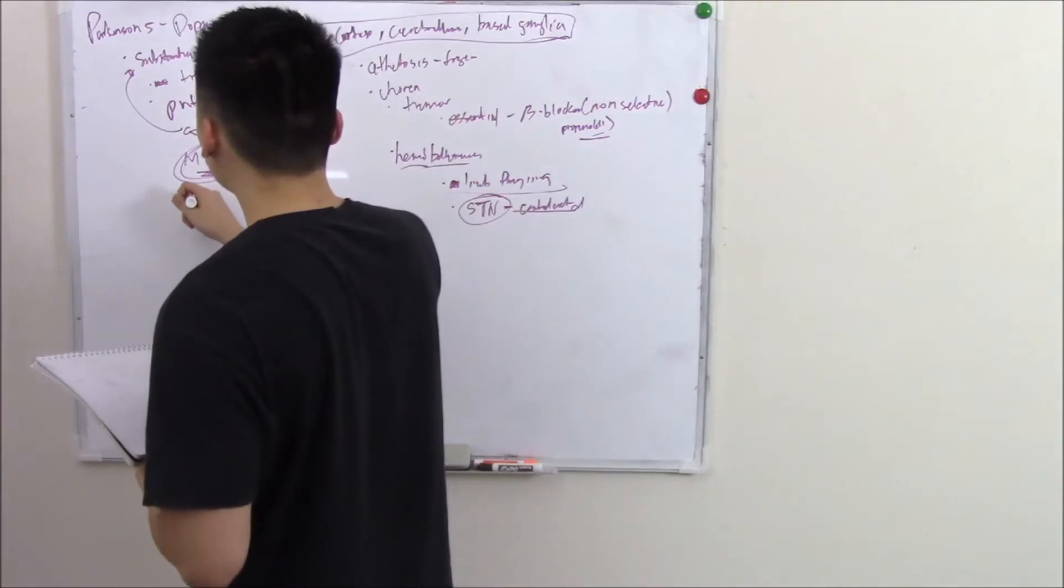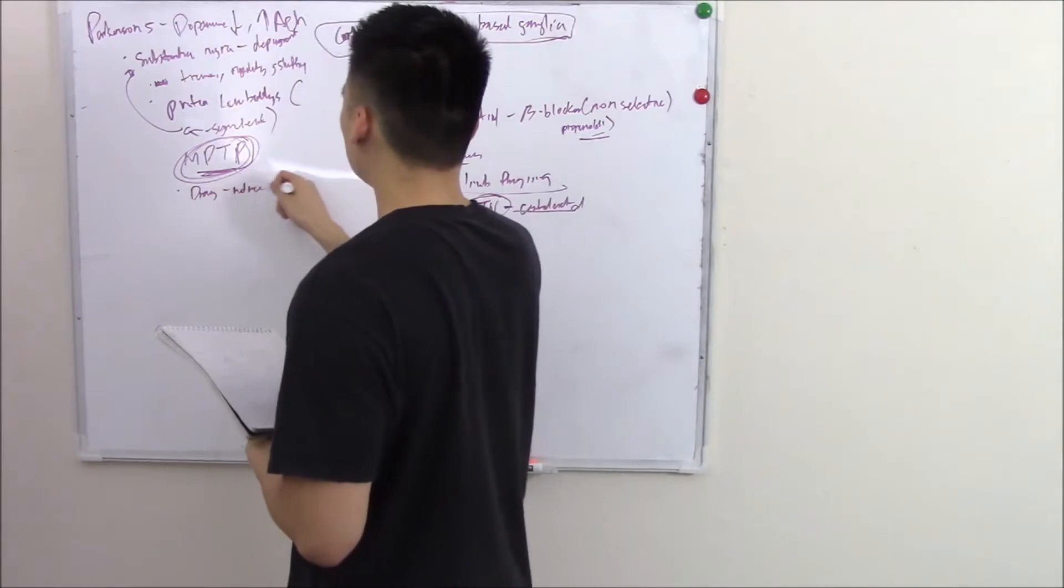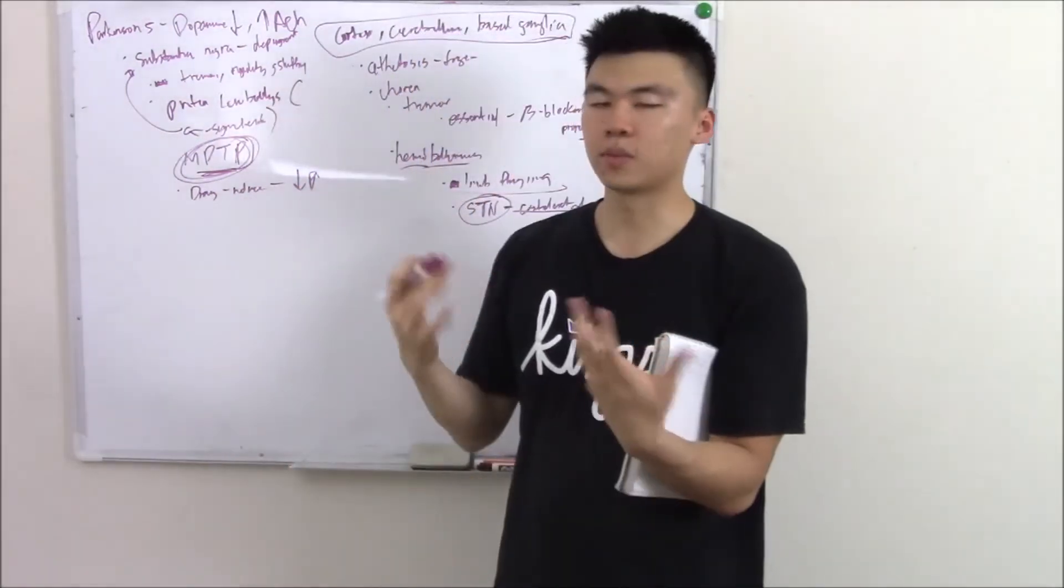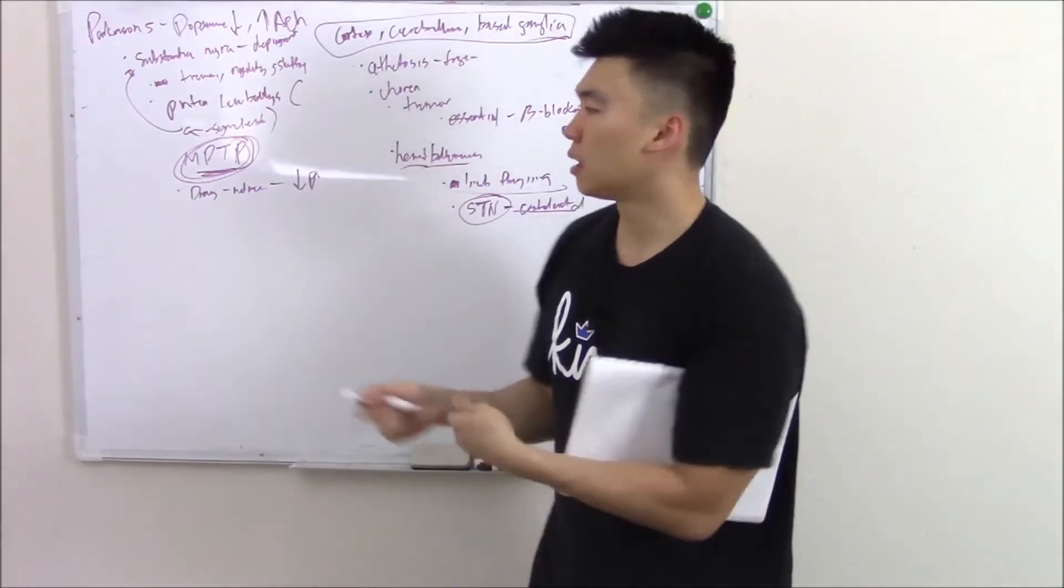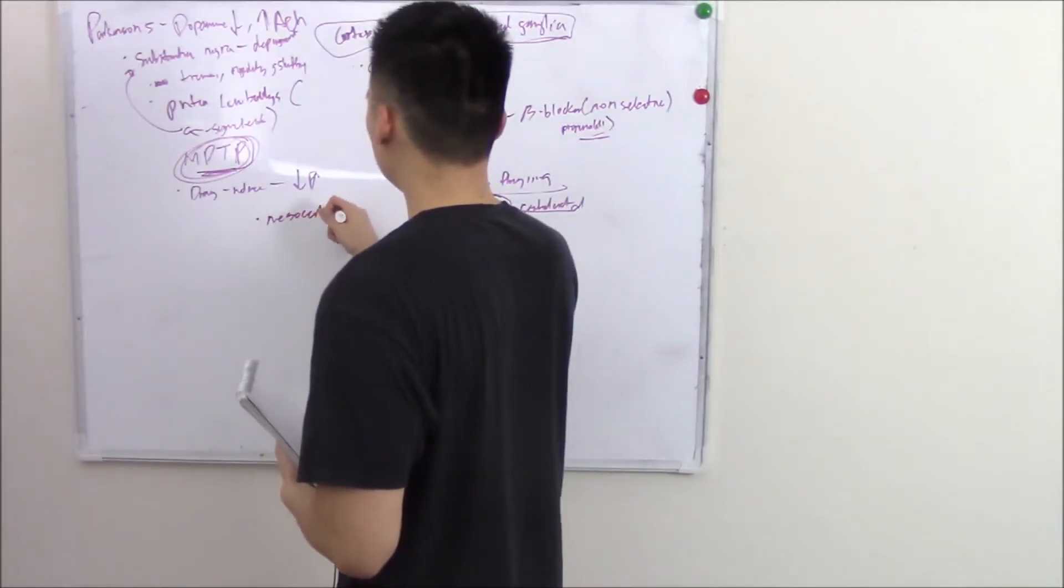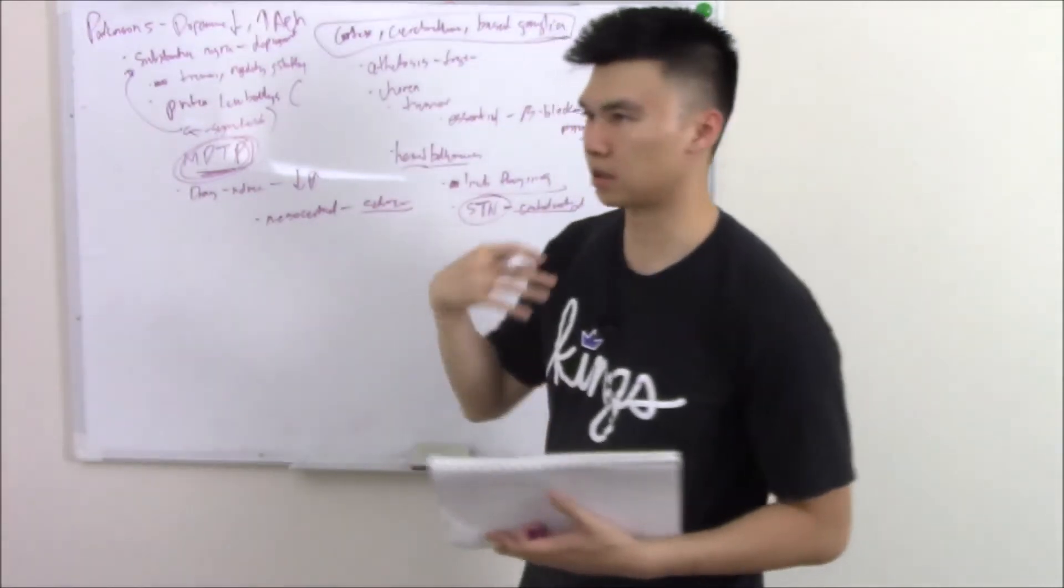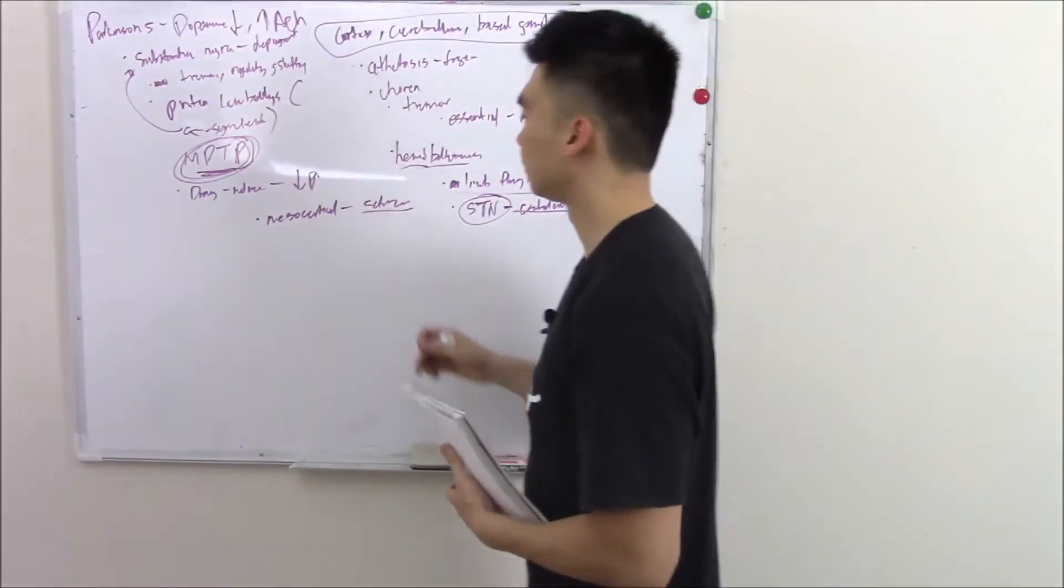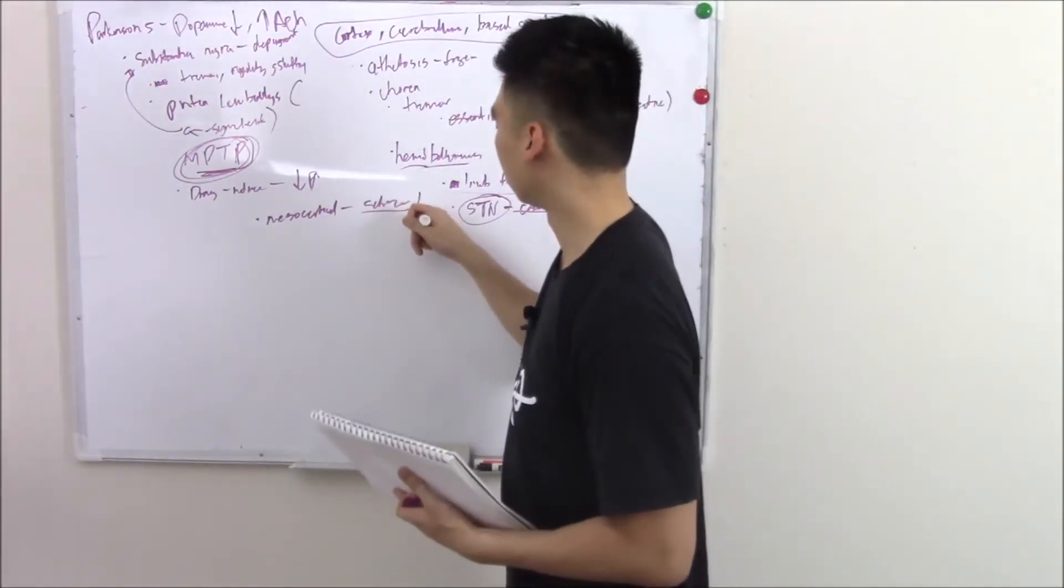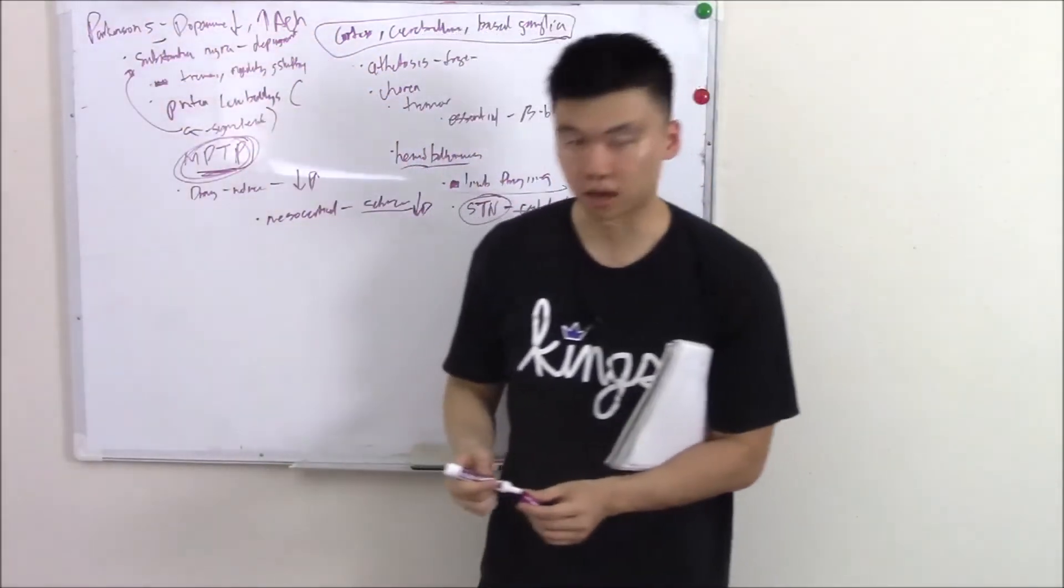You can also have drug-induced Parkinson's. These are drugs that block dopamine. Why would we ever want to block dopamine? Dopamine does a lot of things in different places. Dopamine in your mesocortical pathway causes schizophrenia symptoms, hallucinations, delusions, all that stuff. So if we have a patient with schizophrenia, we want to block that dopamine. Unfortunately, it's not very specific and lowers dopamine in our basal ganglia also and causes Parkinson's.